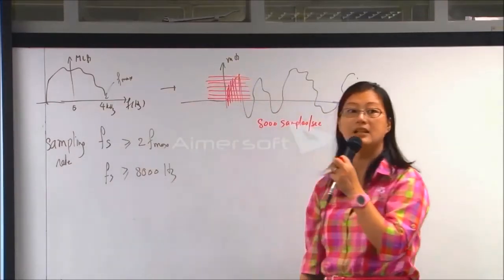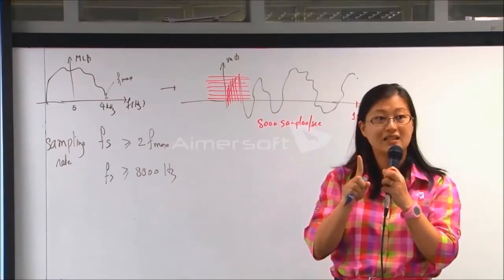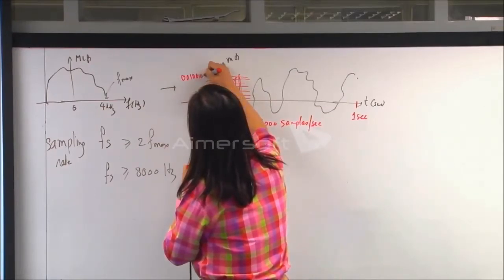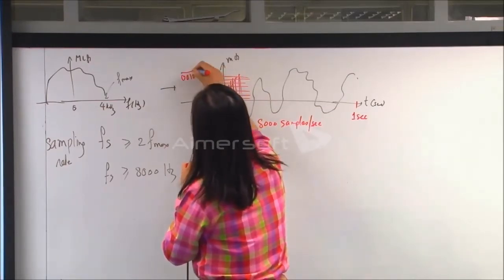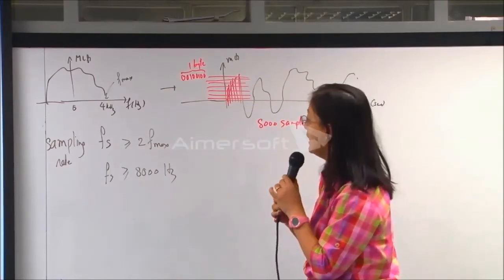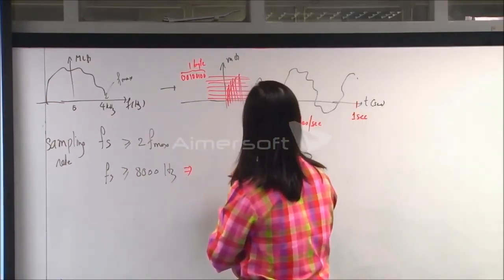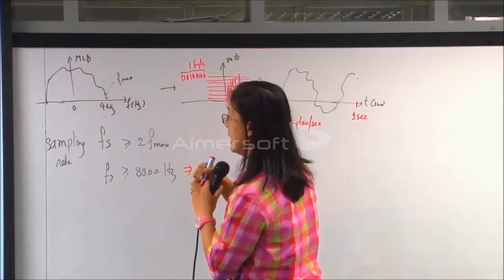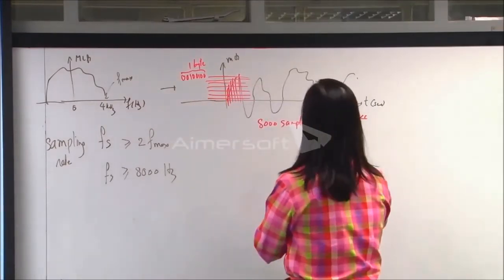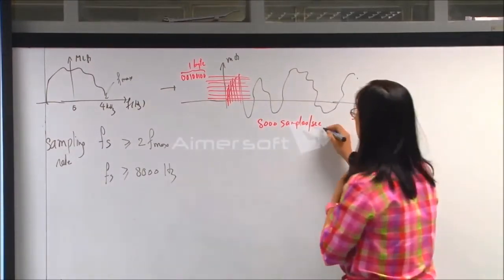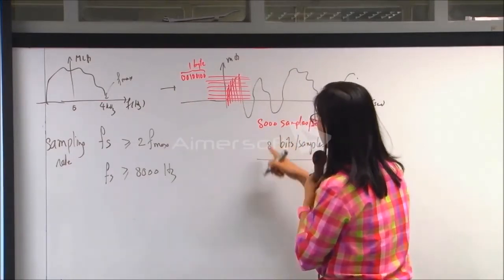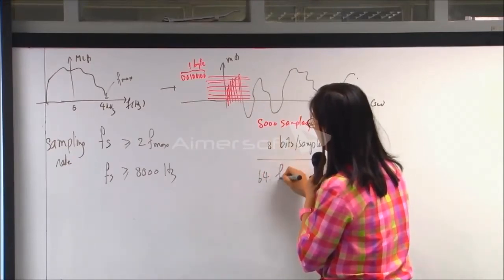Then you need to quantize. In the standard, we use one byte or 8 bits per sample. So each sample is one byte. You have 8,000 samples per second and one byte per sample, so you multiply: 8,000 samples/sec × 8 bits/sample = 64 kilobits per second.